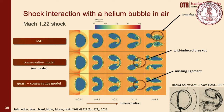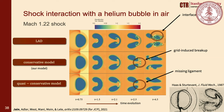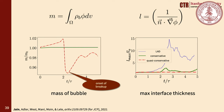For the shock interaction with a helium bubble in air test case, we show time evolution of the bubble shape. With LAD, the interface diffuses slightly due to lack of sharpening. With the quasi-conservative model, the ligament at the onset of breakup was completely missing. With our conservative model, there was some grid-induced breakup, but without a sub-grid model for breakup, capturing breakup physics is not expected. Quantitatively, the quasi-conservative model had the highest mass error at the onset of breakup, while the other two methods conserved mass. LAD also showed increased interface thickness over time.